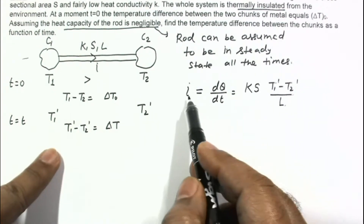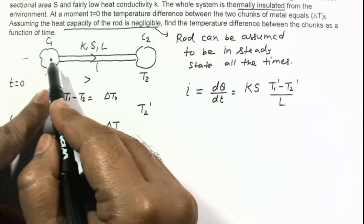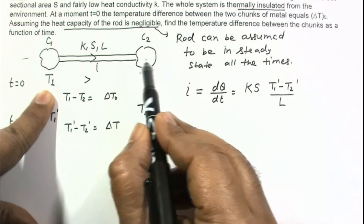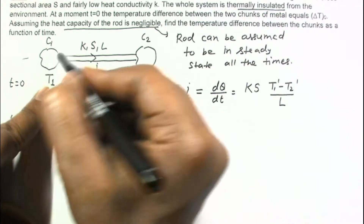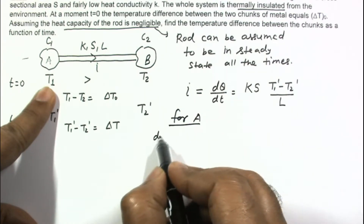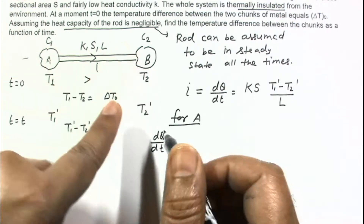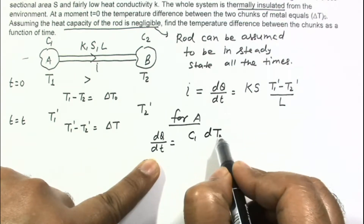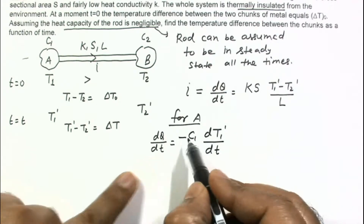Now we can relate this heat current to the temperatures of these chunks. Heat is flowing out of chunk A, so the temperature of chunk A will decrease with time. For chunk A, dQ by dt equals C1 times dT1 dash by dt. Since this temperature is decreasing with time, I am putting a minus sign here. This equals I.